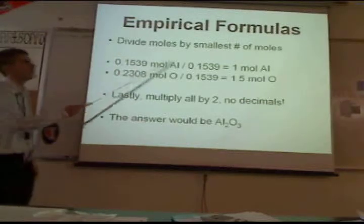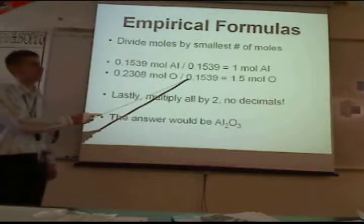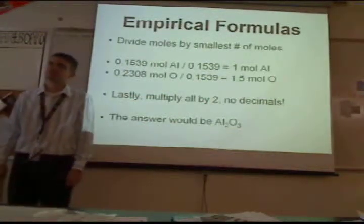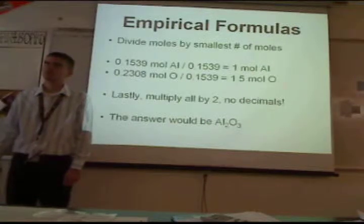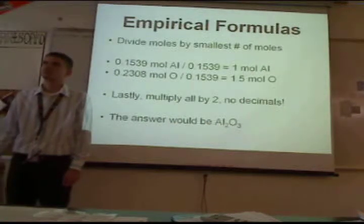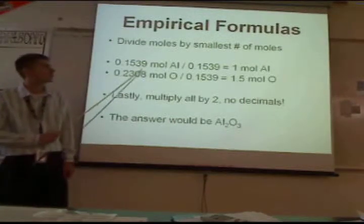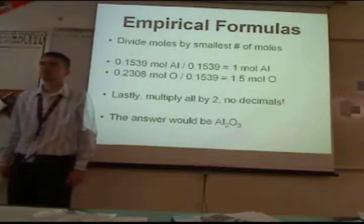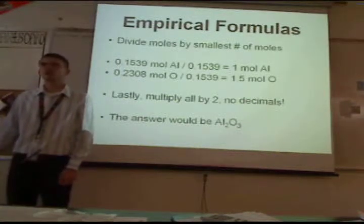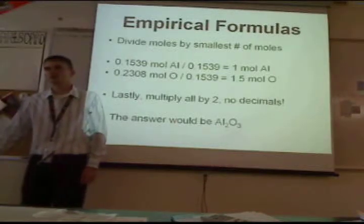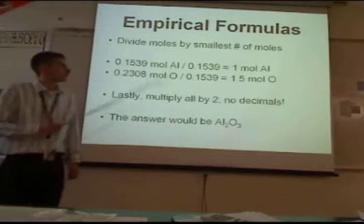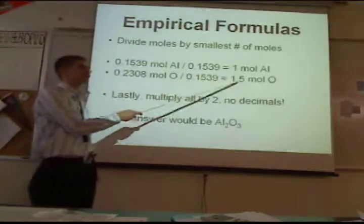You divide them both by the smallest value — 0.1539 — so you get one mole of aluminum for every one and a half moles of oxygen. You find out which one is smallest and divide everything by that, because you need to see how many there are relative to each other to figure out the ratios. But you can't have a decimal in a formula.